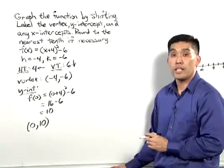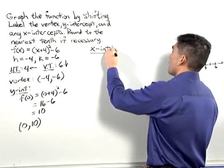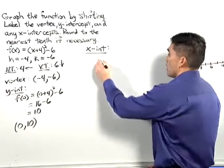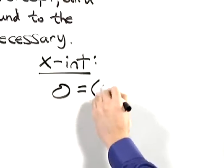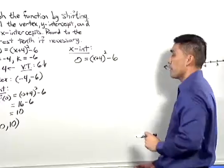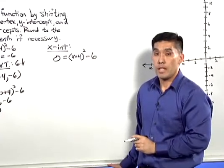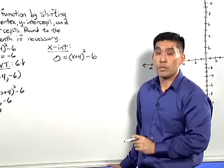Now let's find the x-intercepts. The x-intercepts occur when f of x equals 0. 0 equals the quantity x plus 4 squared minus 6. We need to solve this quadratic equation for x, and we can do that by extracting the roots.